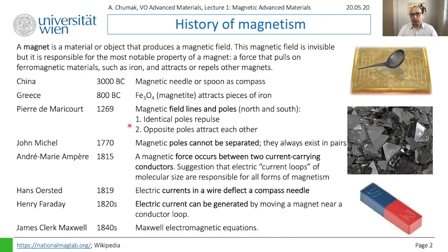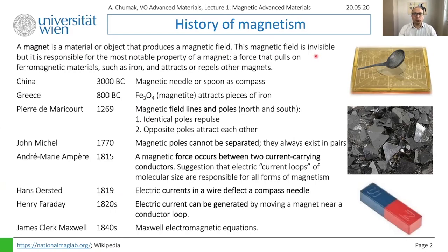The second reason for including history is that it will help us refresh our memories of electrodynamics, which was covered earlier and is not repeated in this course. A magnet is a material or object that produces a magnetic field, and because of this field, two magnets can attract or repel each other depending on their orientation.